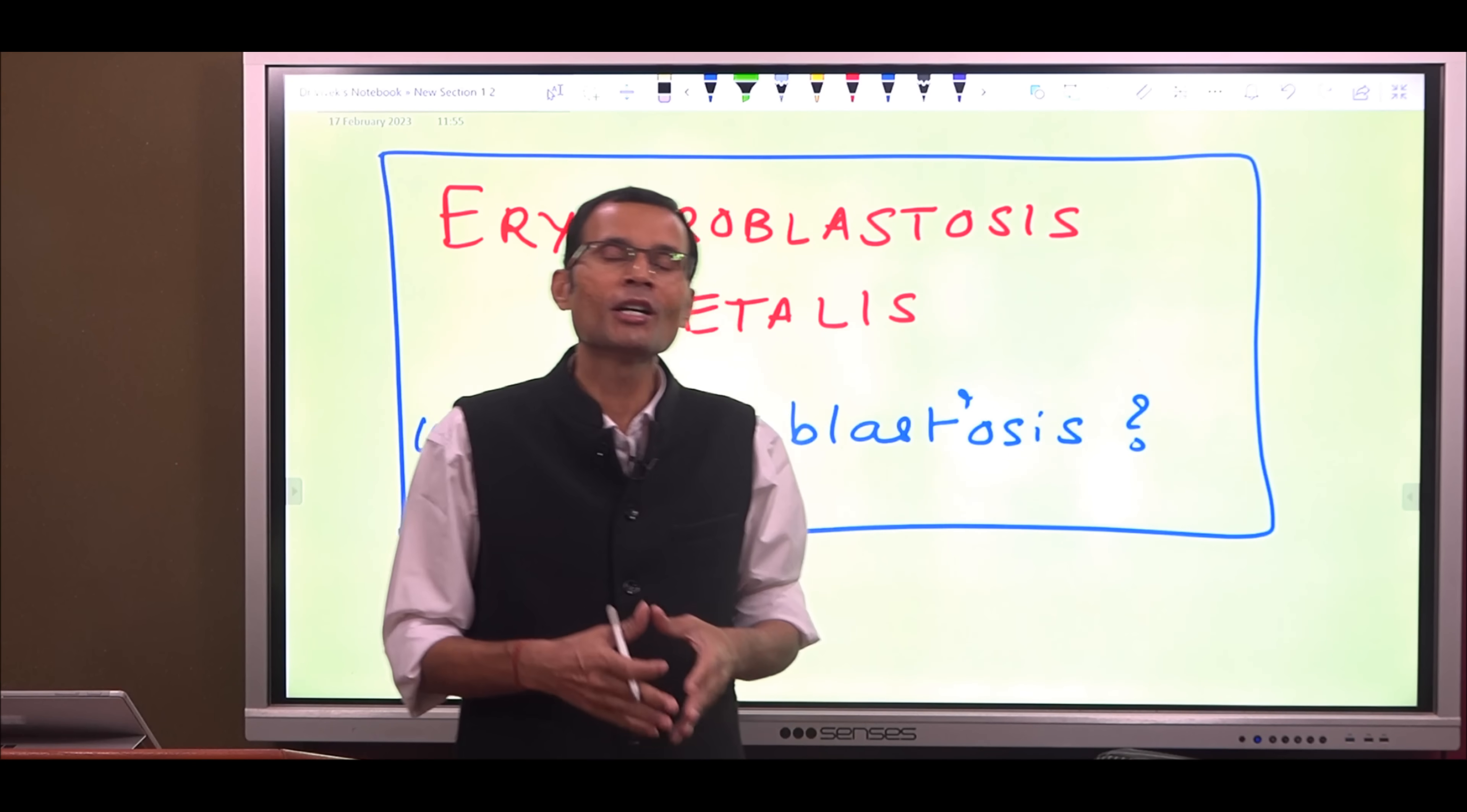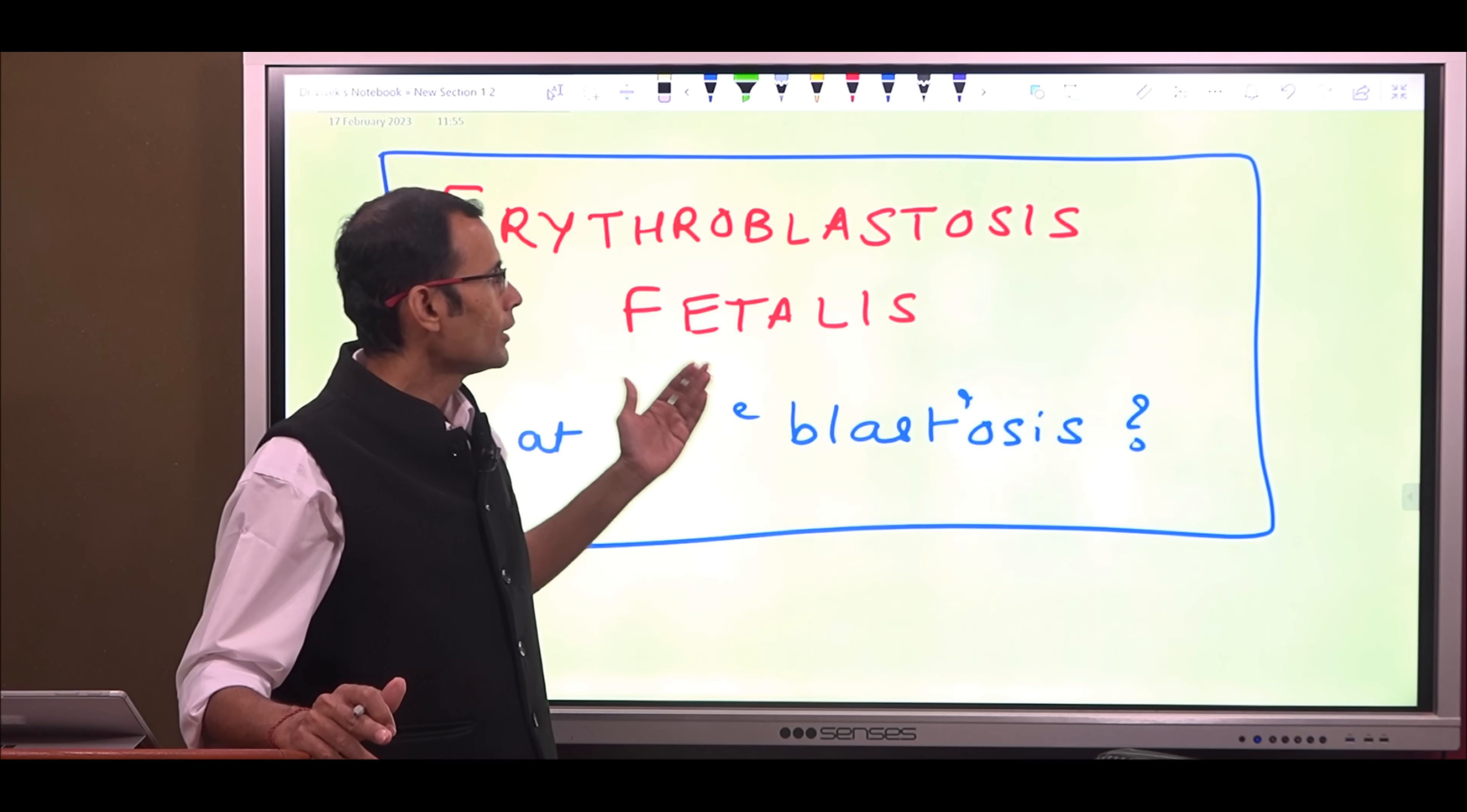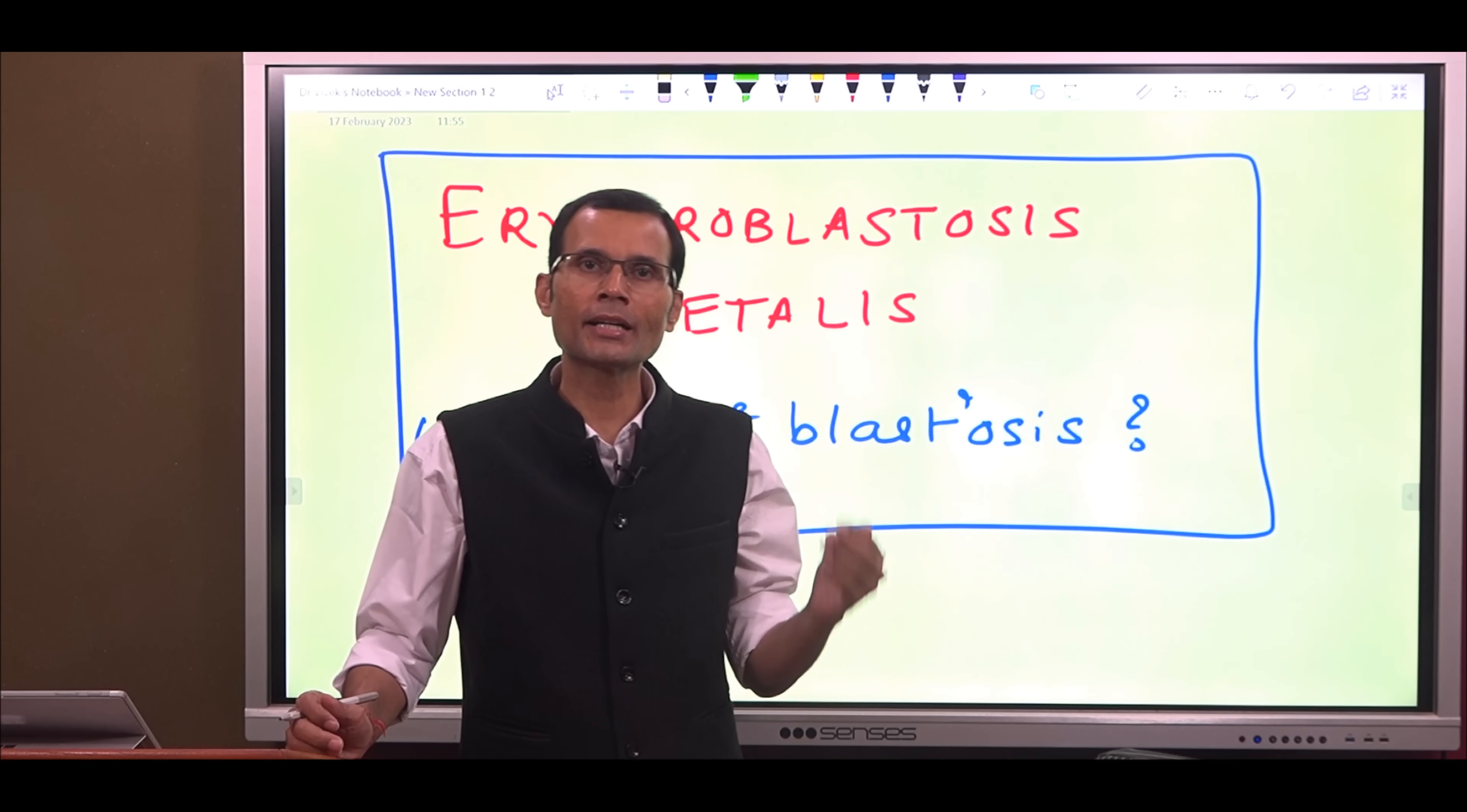So the immature nucleated precursor cells or precursor stages of the RBC are called erythroblasts, and now it should be clear that this term erythroblastosis fetalis is because basically it is a hemolytic disease of the newborn because of the Rh incompatibility between mother and fetus.